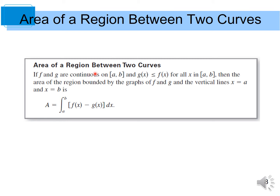Area of the region between two curves: if f and g are continuous on the closed interval [a, b] and g(x) is less than or equal to f(x) for all x in [a, b] — in other words, the curve of f is higher than the curve of g — then the area of the region bounded by the graphs of f and g and the vertical lines x = a and x = b is given by: Area = integral from a to b of [f(x) minus g(x)] dx.